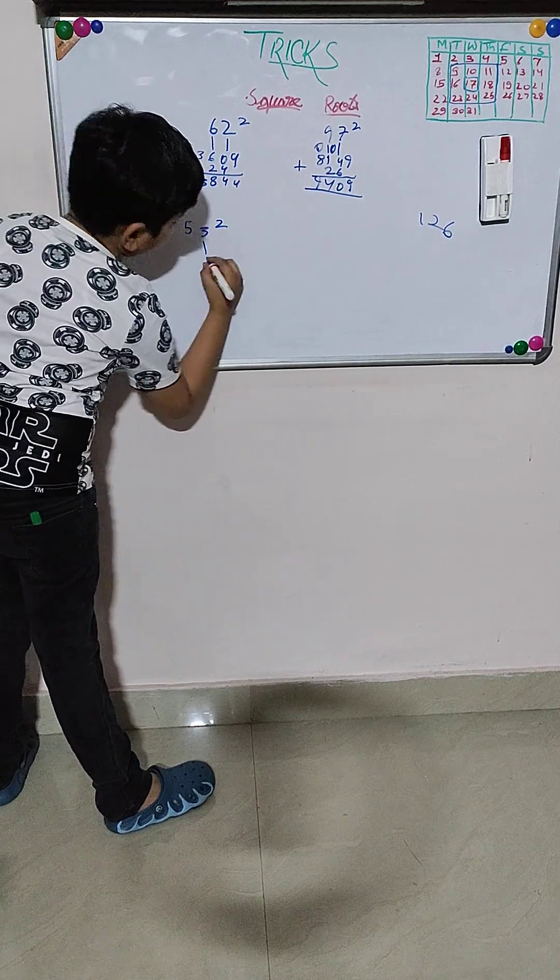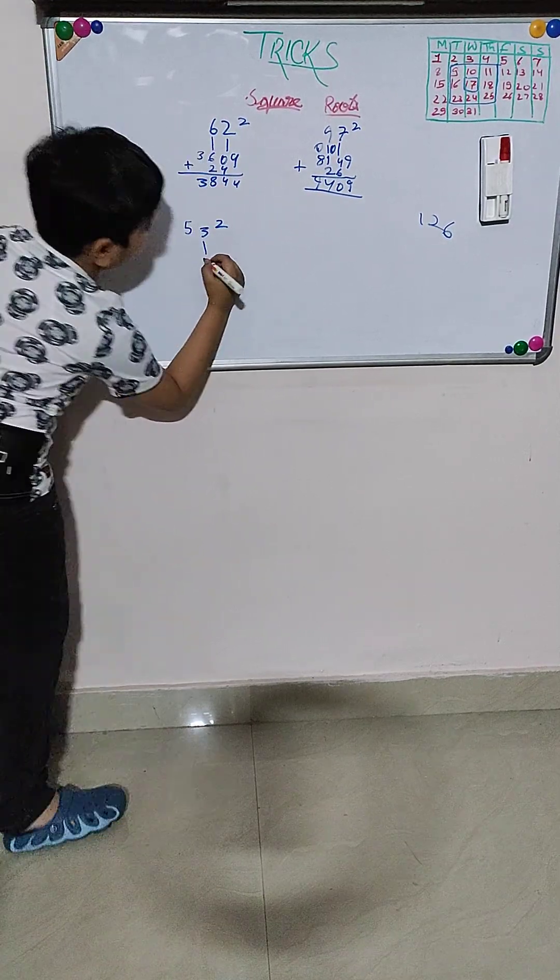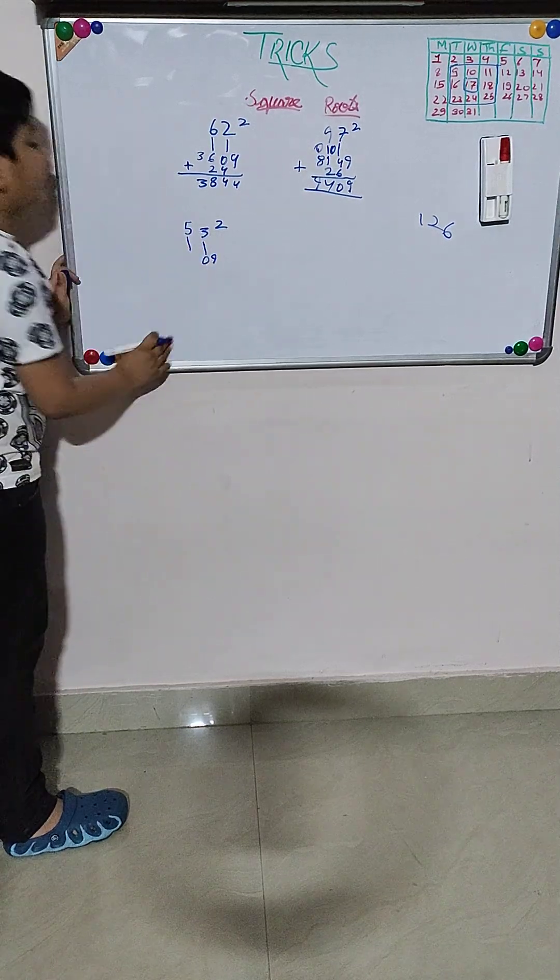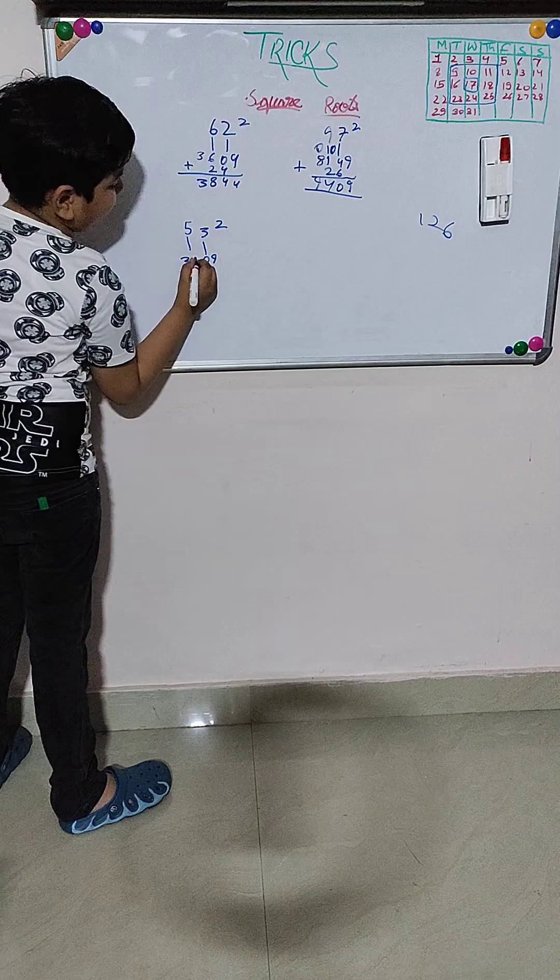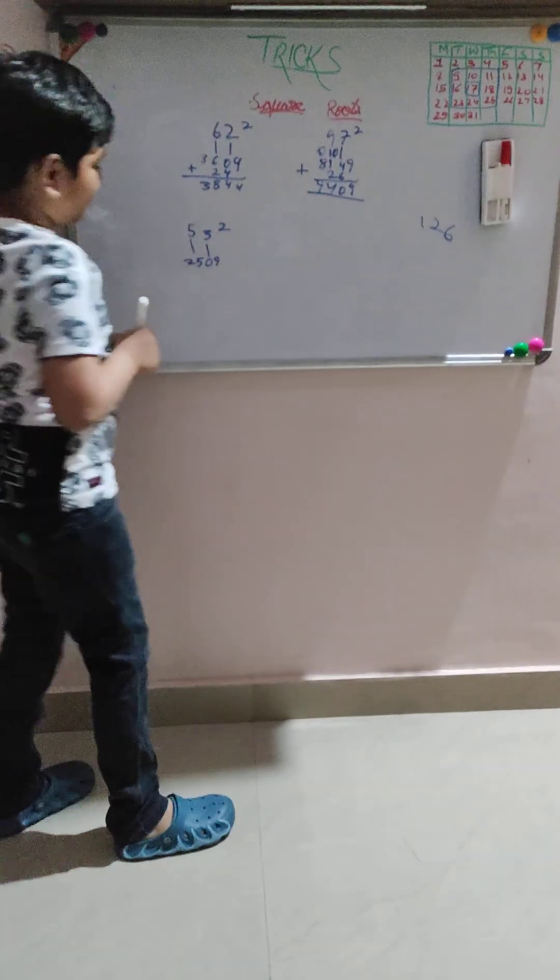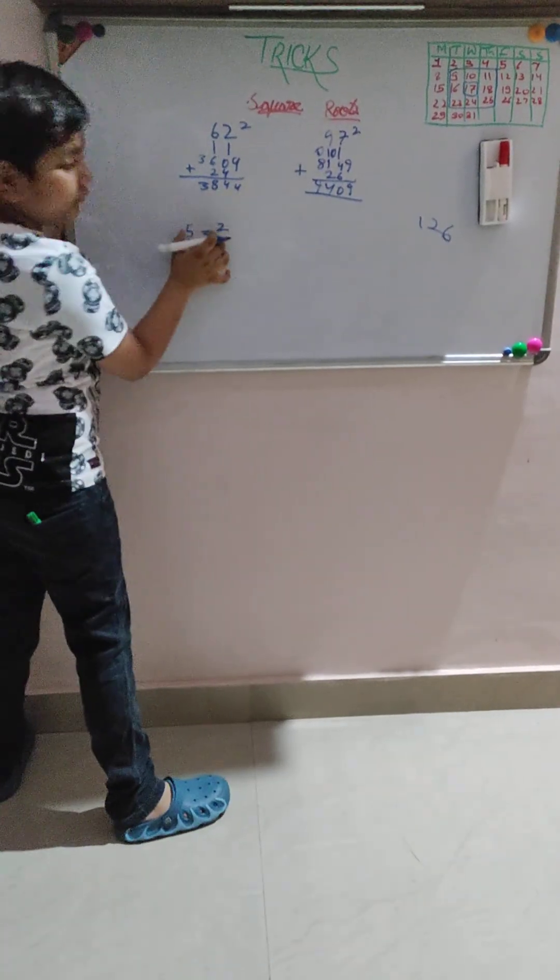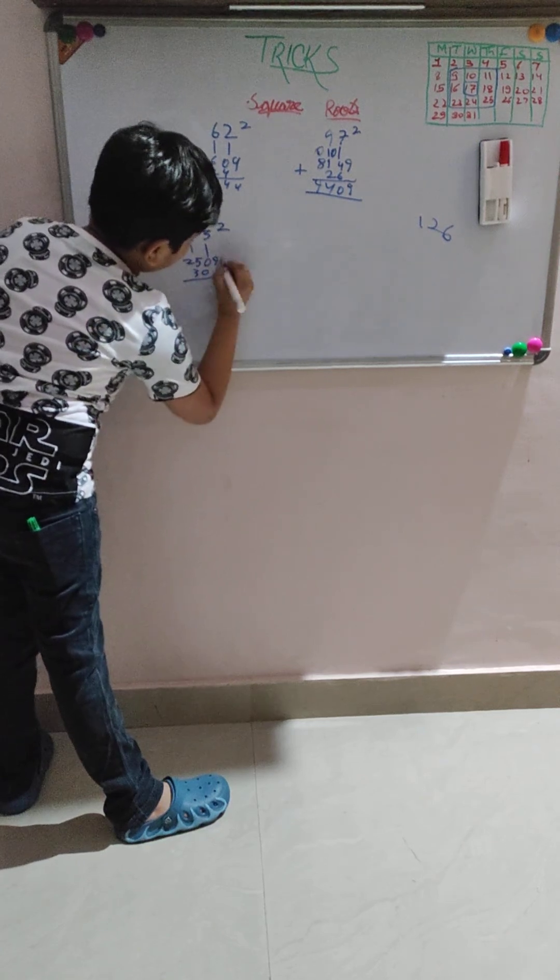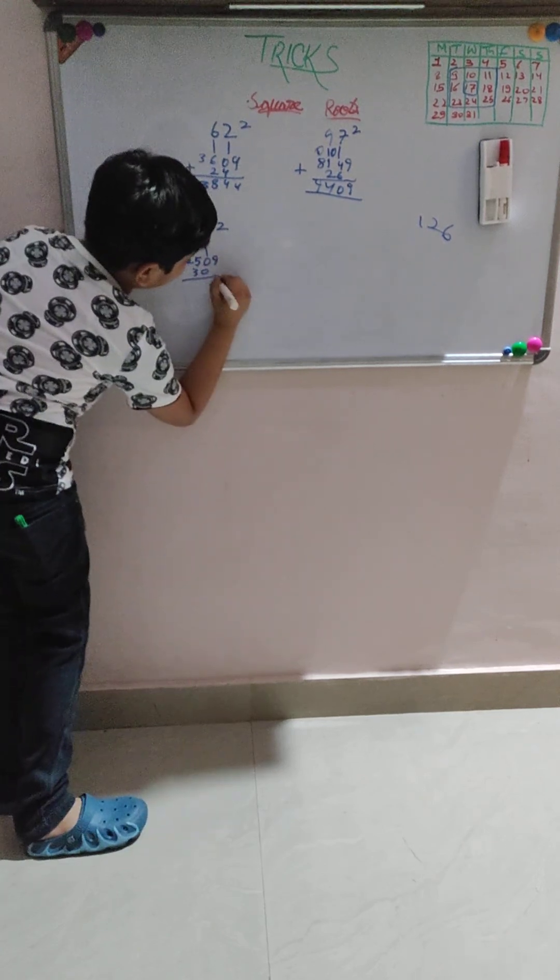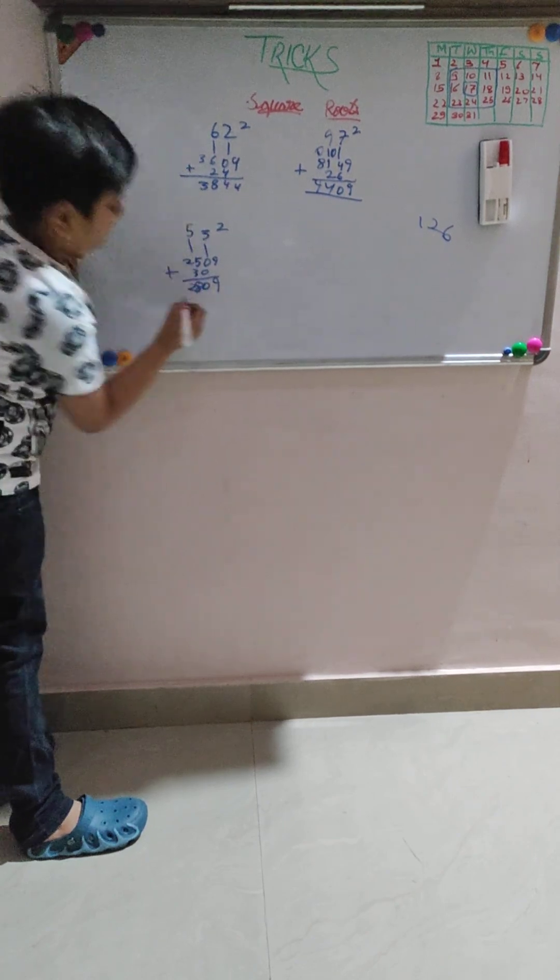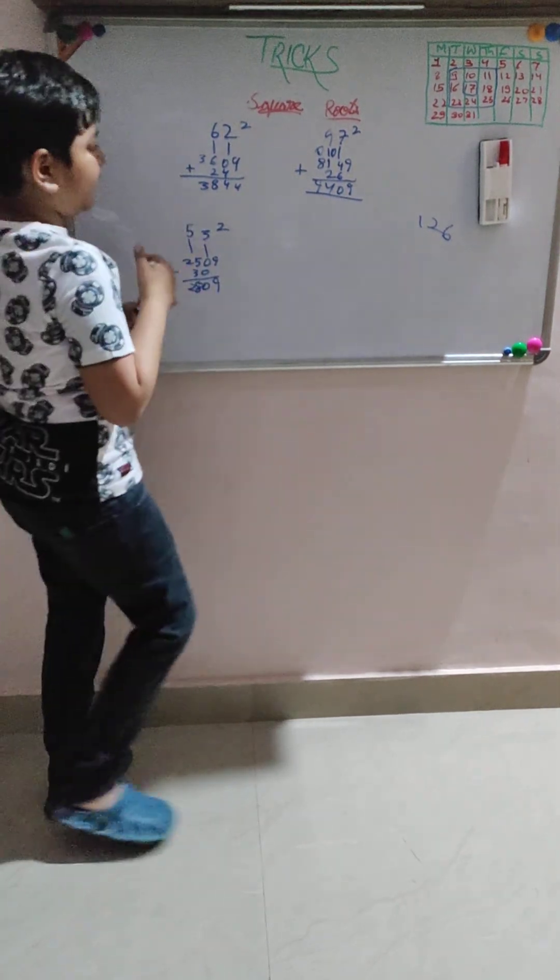The square of 53. Square of 5 is 25, square of 3 is 9. Then multiply 5 into 3 equals 15, into 2 equals 30. Then we add 9, 30, 25. So the answer is 2,809.